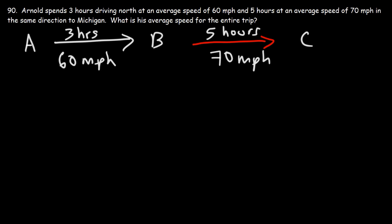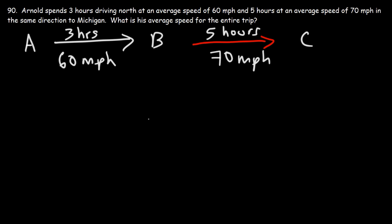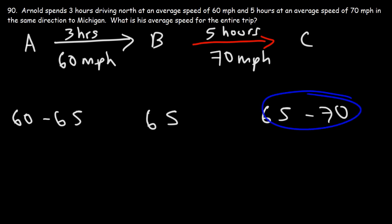What do you think the range for the average speed will be? Well, we know it has to be between 60 and 70. Would you say the average speed is 65, or between 60 and 65, or between 65 and 70? Notice that he spends more time traveling at a higher speed. So I would say the average speed for the entire trip should be close to 70 — that is, between 65 and 70.